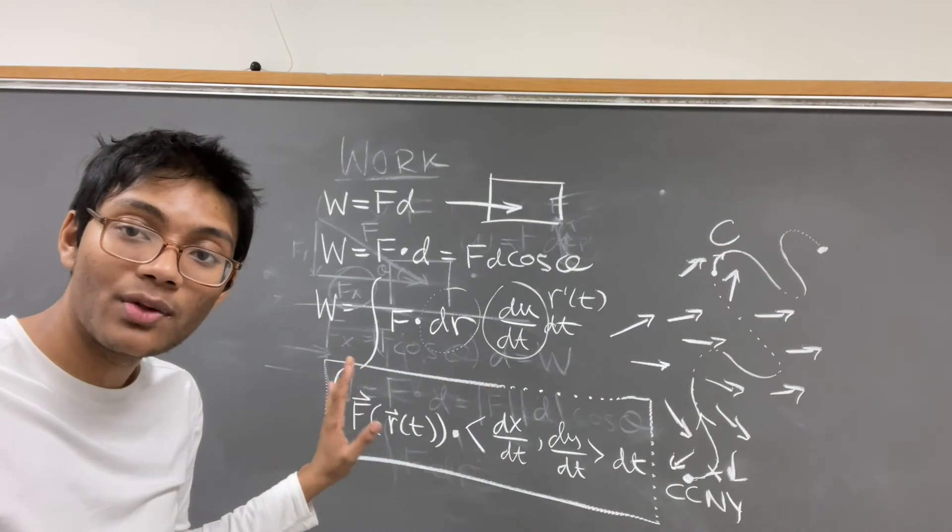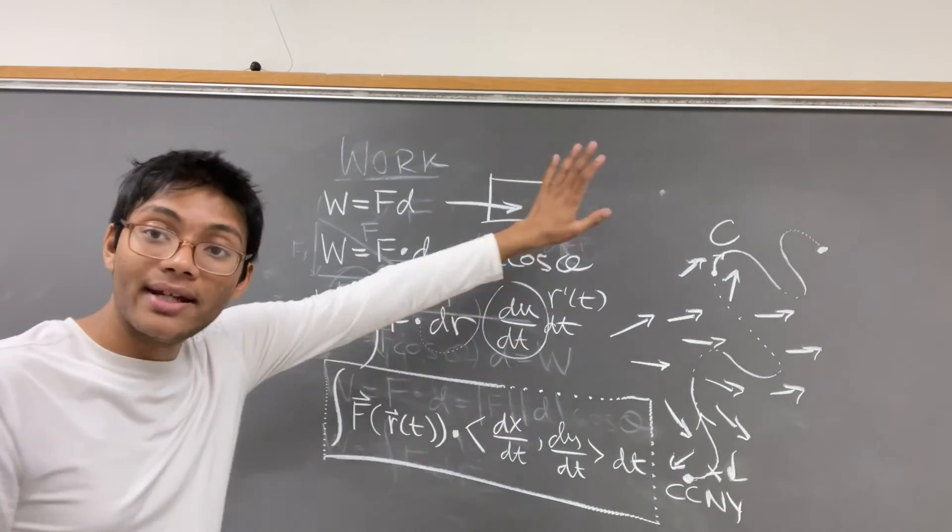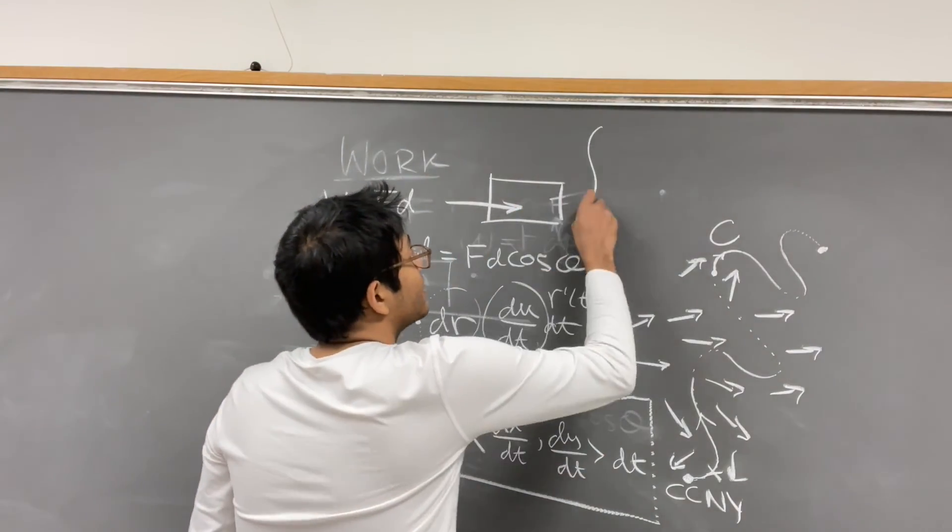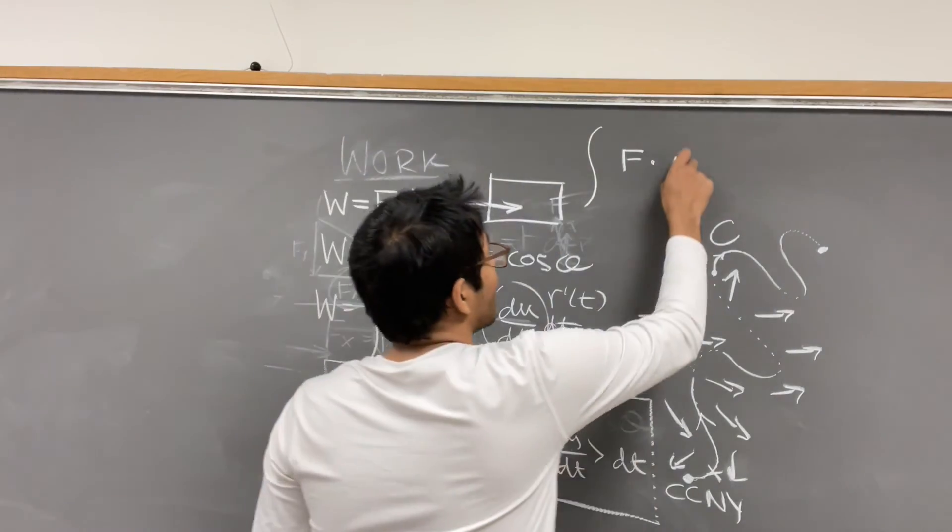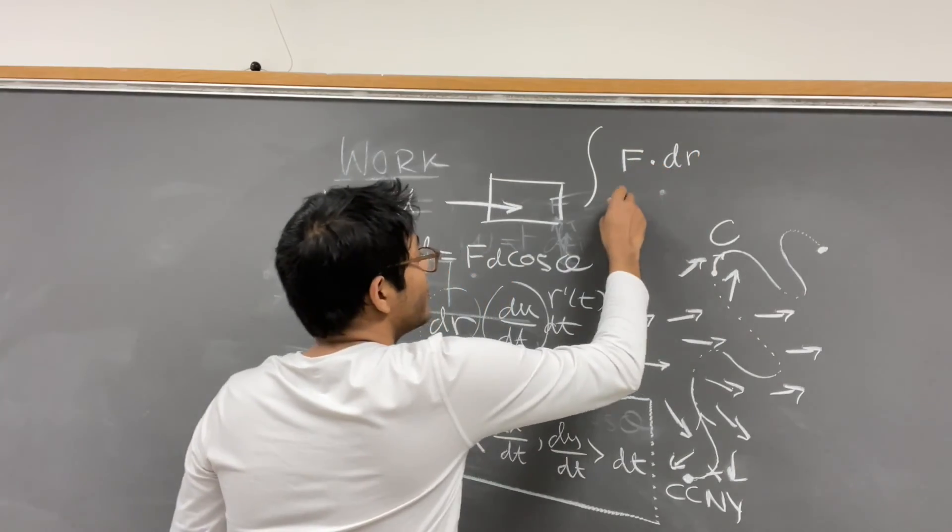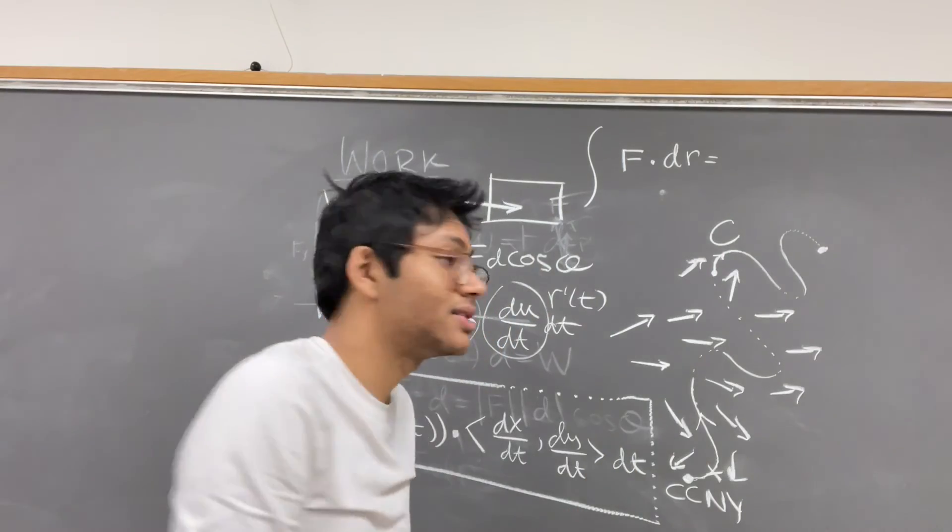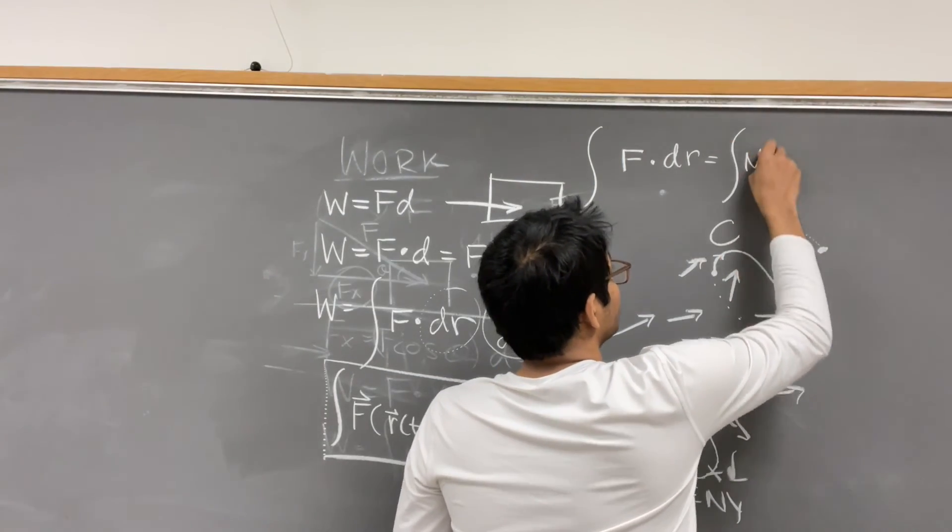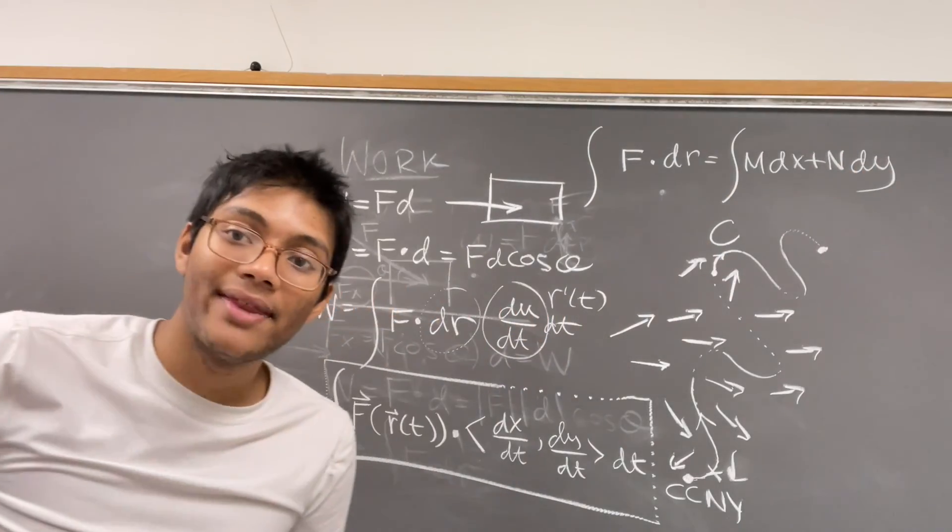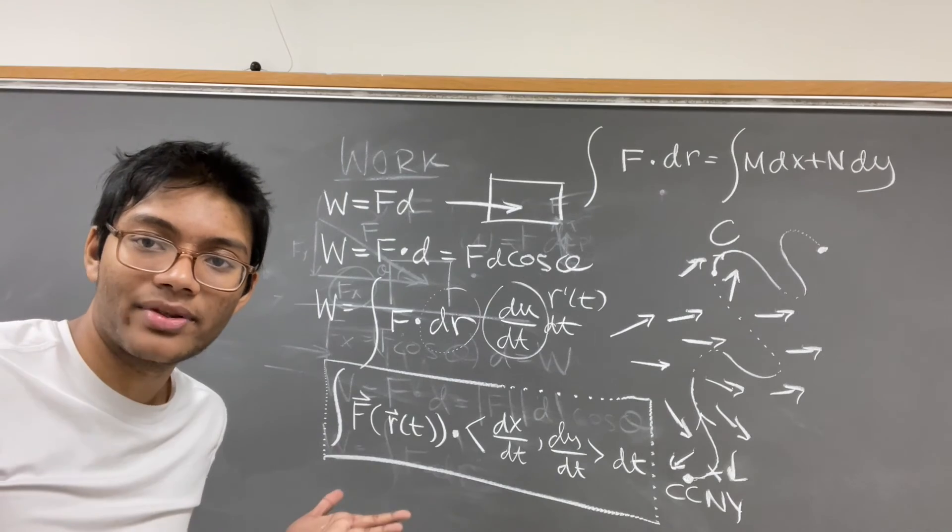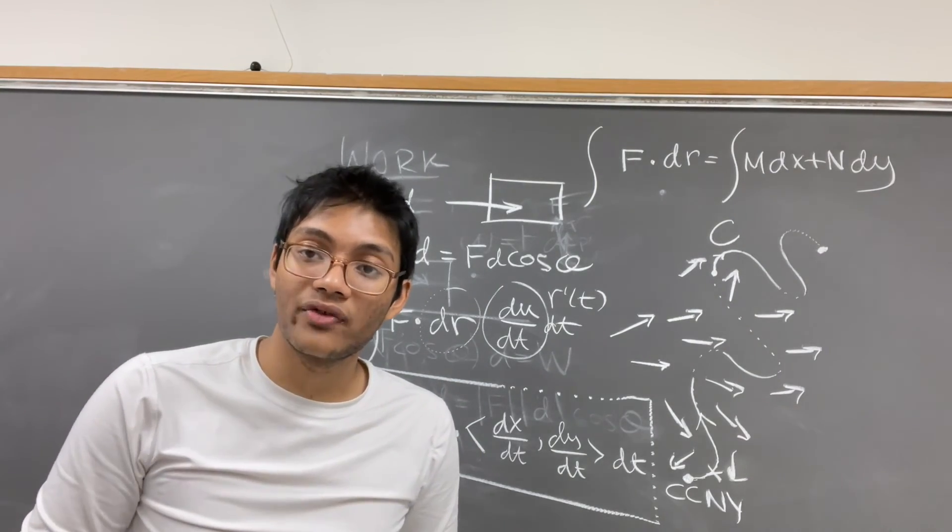So this is one way to write the integral formulation for the work formula. Another way that you might often see it is the force field dotted with dr. And if we write the force field as m comma n, as a vector function, then this will end up as m dx plus n dy. And that's just another way to write this same thing. It's just another formulation of the work integral formulation.